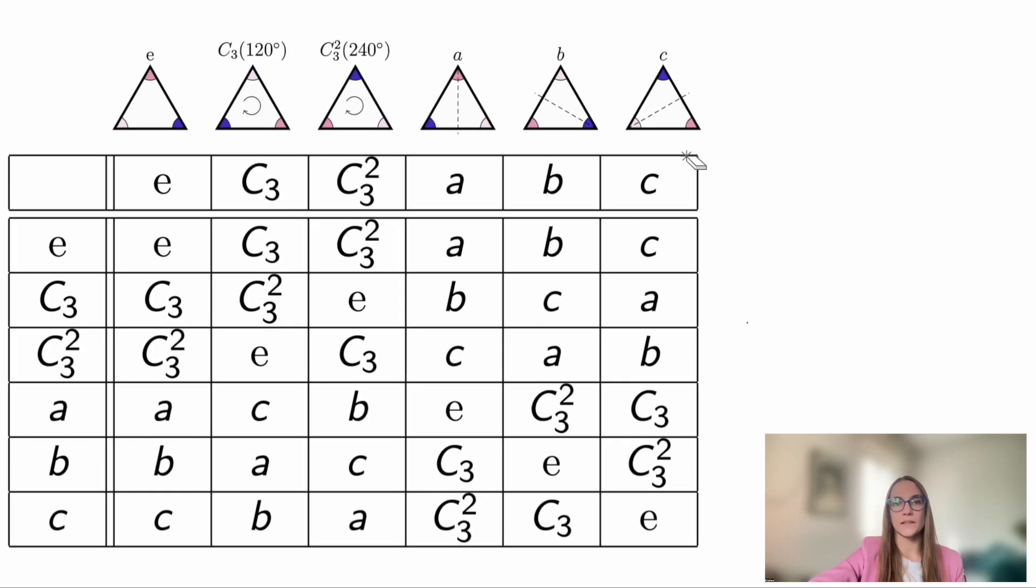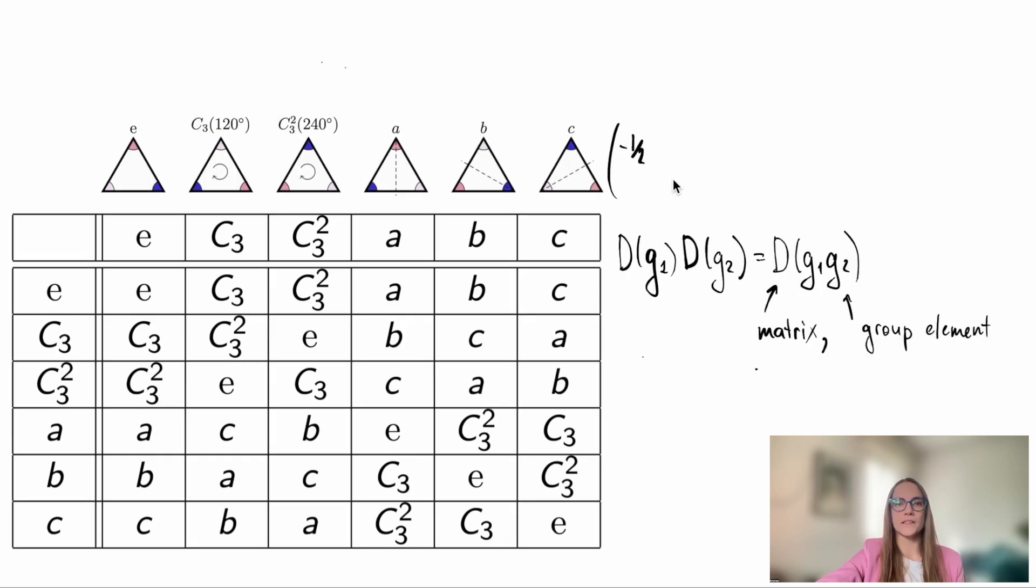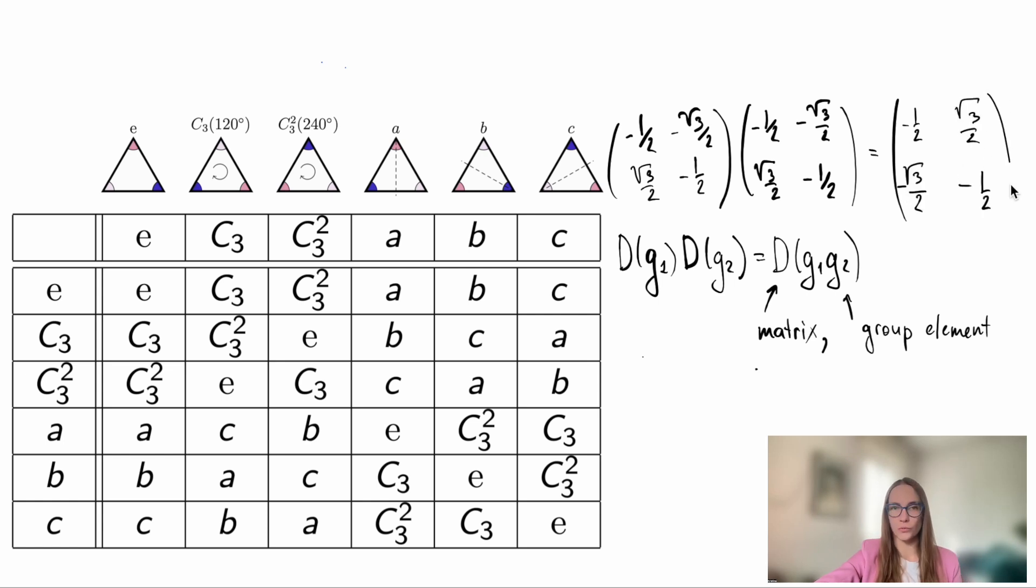Note that the matrices that we write are also multiplied in the same way. Specifically, a matrix D from G1 corresponding to an element G1 of the group multiplied by a matrix D of G2 corresponding to an element G2 will be simply equal to the matrix D of multiplication G1, G2. It turns out that these matrices are representations of the group. Or more precisely, a representation of a group is any set of matrices which satisfies this multiplication rule.